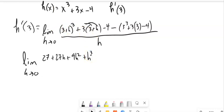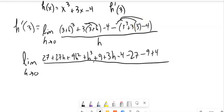I'm going to distribute that 3 into there. So plus 9 plus 3h. Still got this minus 4. I'm going to distribute that negative into there. 3 cubed is 27. So minus 27, minus 9, plus 4. All over h.